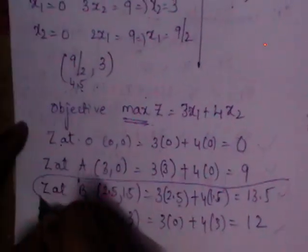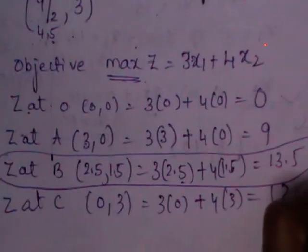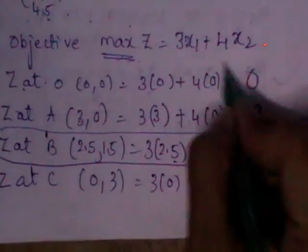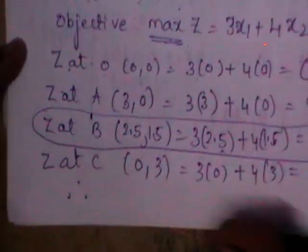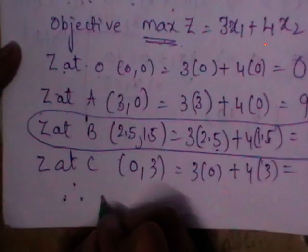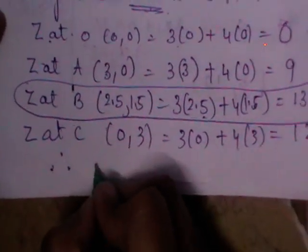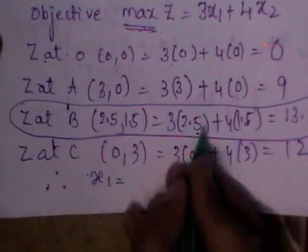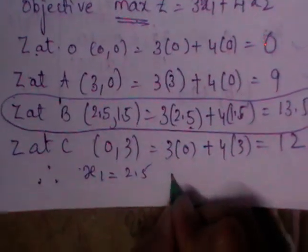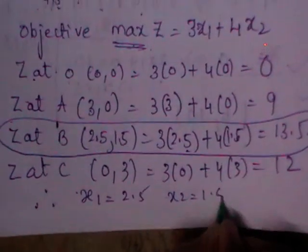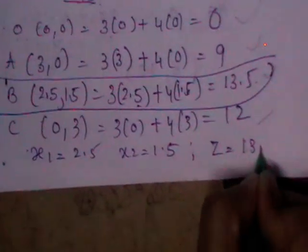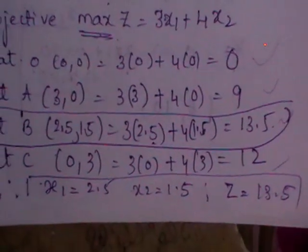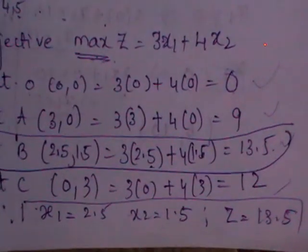The maximum value of z is 13.5, so the solution of the given LPP is x1 equals 2.5, x2 equals 1.5, with z equals 13.5. This is the solution using the graphical method. This is case 1 of the graphical method. Thank you.